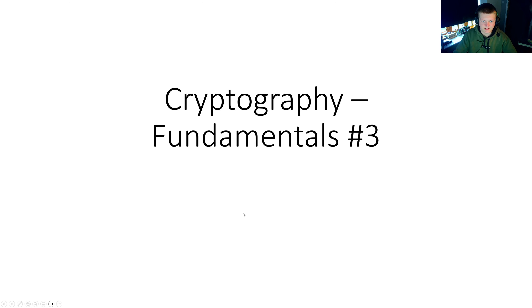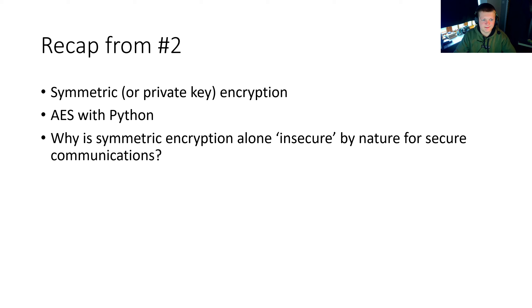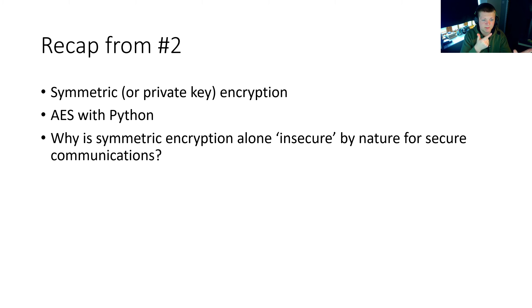Hey guys, it's Ben and this is the third lesson on cryptography. If we just recap from the second lesson, we covered in a little detail symmetric encryption. Just to remind you, symmetric encryption is where you have one key which is used for both encryption and decryption. You encrypt your data with this symmetric key, this private key, and you send it to the receiver. The receiver also has this private key and they decrypt it. I showed this with a practical example in Python.